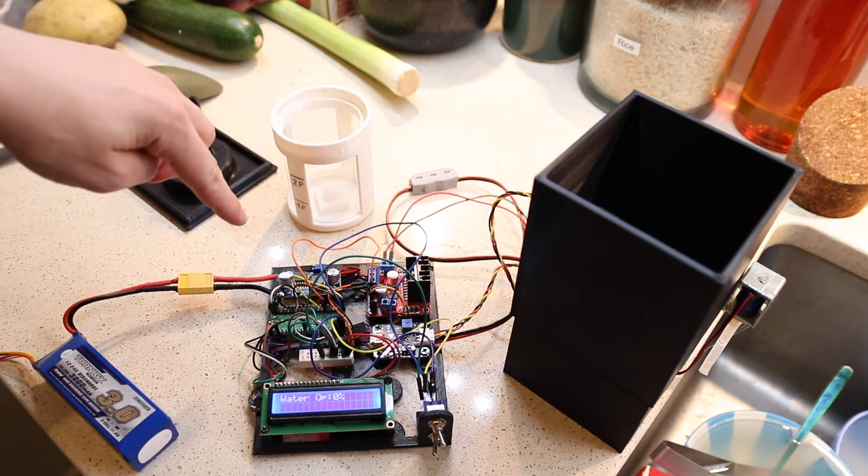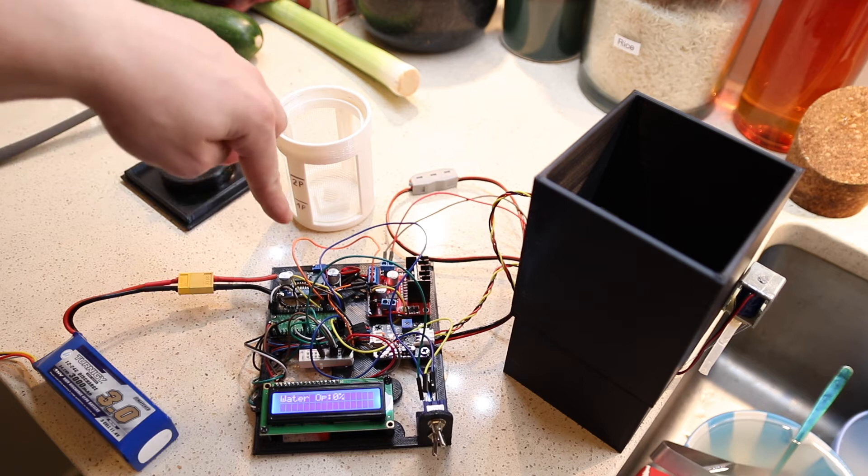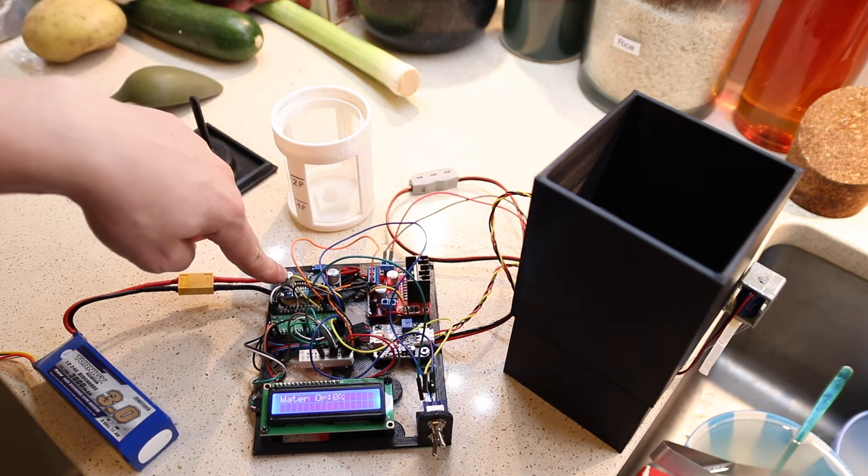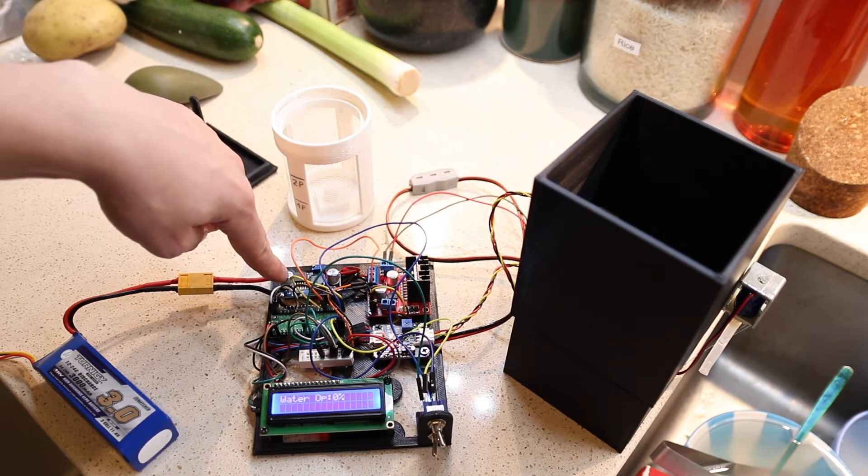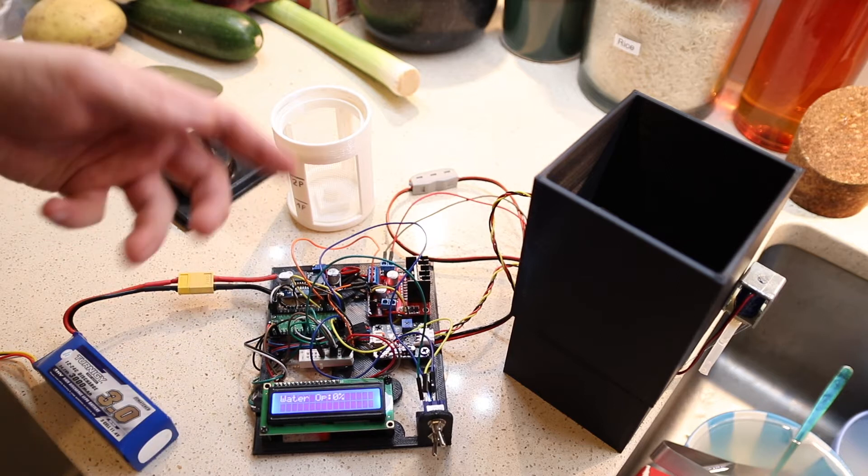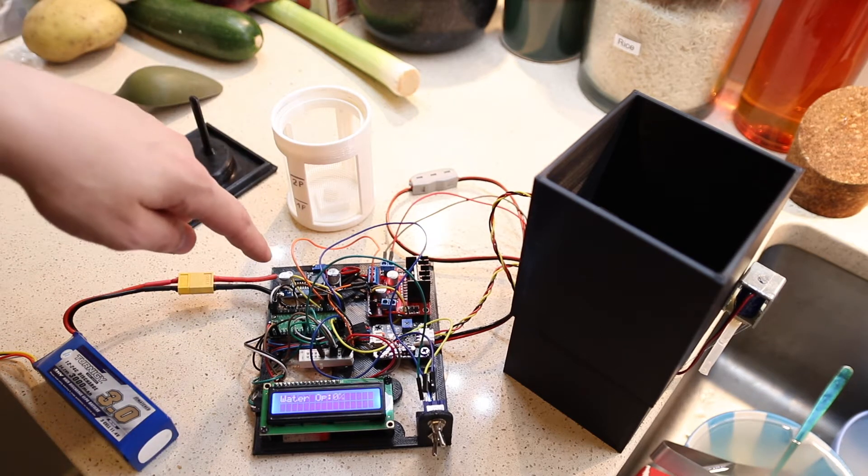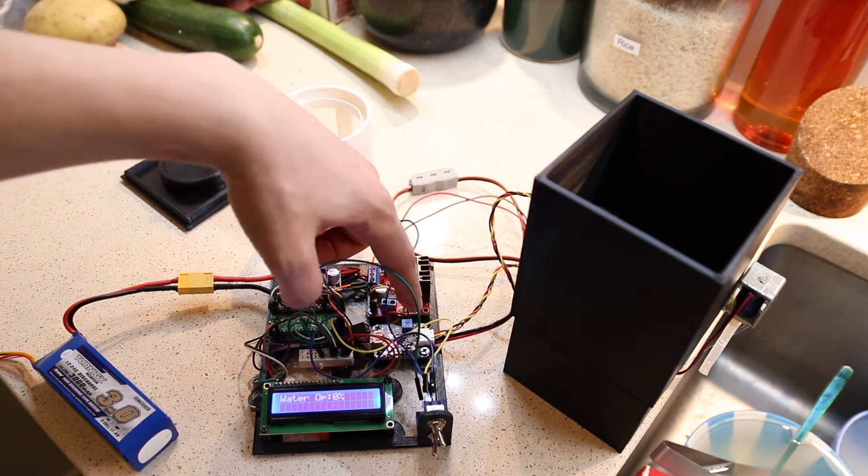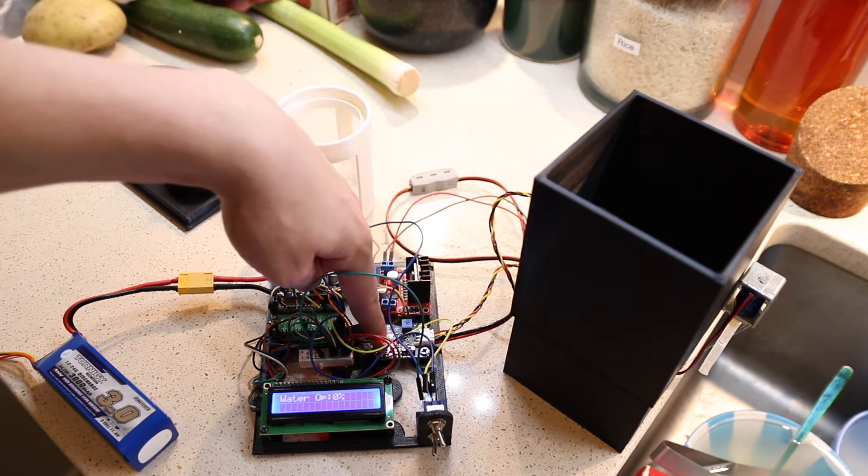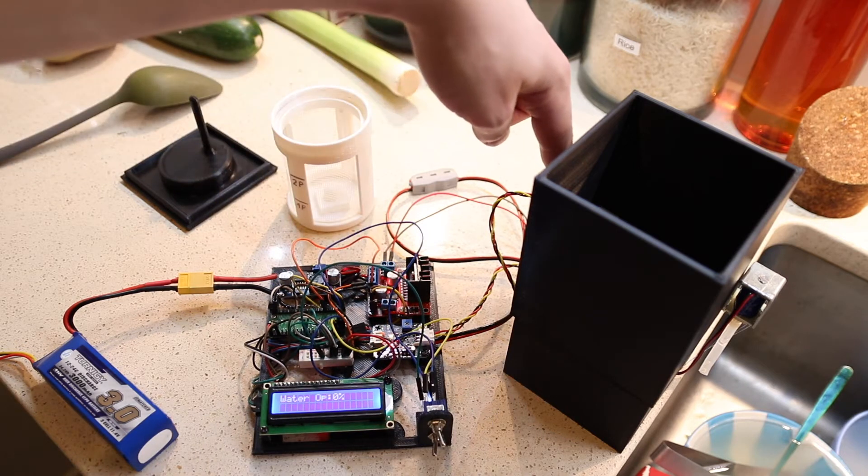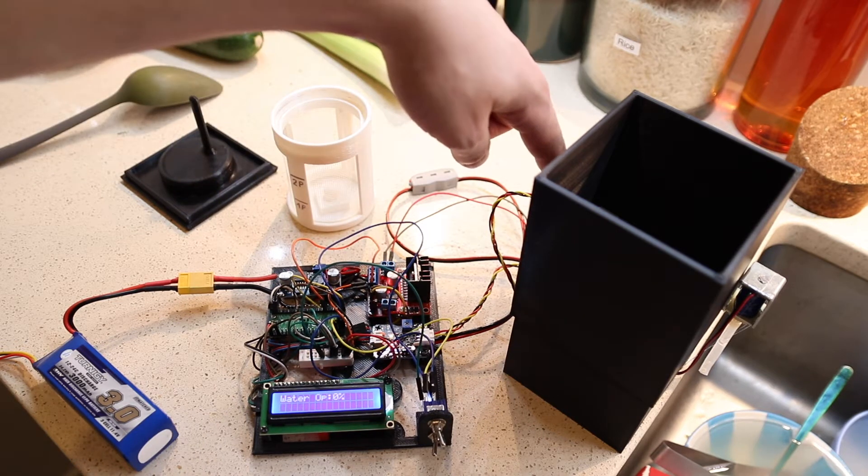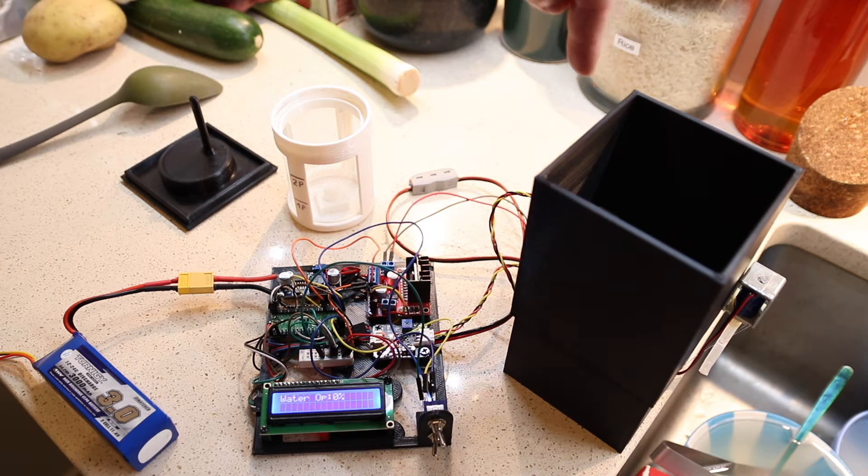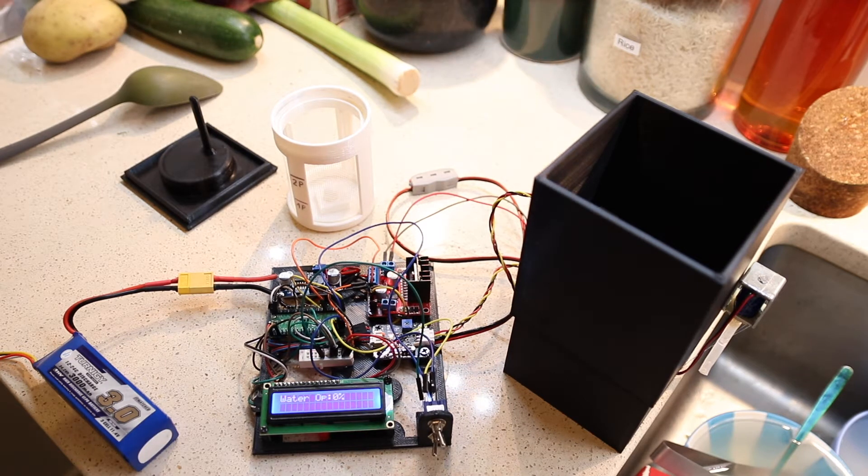On here we've got a buck converter. Pretty much the only reason it's here is so that I can control the speed of the motor, just because when I'm testing at night it's too loud sometimes. We've got a motor driver and we've got a digital out for a sensor that's in here. That sensor senses the particles in the water so I can tell whether the water's dirty and when it's clean.